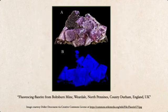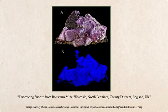Fluorite fluoresces a very nice blue, almost sort of purple color, like that right there. This specimen is from England. At the top you have visible light, and at the bottom you have the mineral actually fluorescing — which is, again, the way that the human eye perceives this release of energy.